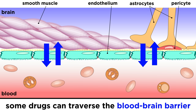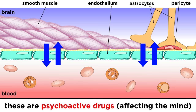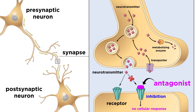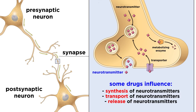Some drugs are able to penetrate the blood-brain barrier, thus making their way into the brain, while others are not. Of the ones that do, most can be referred to as psychoactive drugs, which generally means any drug that affects the mind. This is typically achieved in one of several ways. Some drugs bind to certain synaptic receptors, acting as inhibitors, also called antagonists, while others bind and behave as agonists, meaning that they mimic the role of the native ligand. Some drugs influence the synthesis, transport, release, or deactivation of specific neurotransmitters.